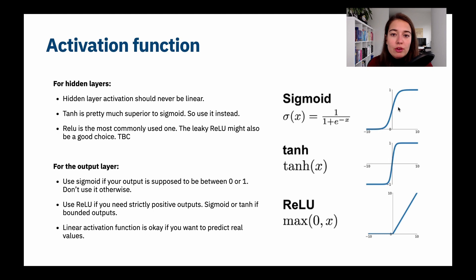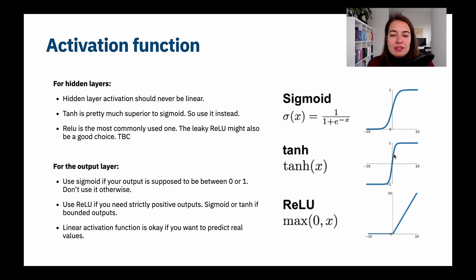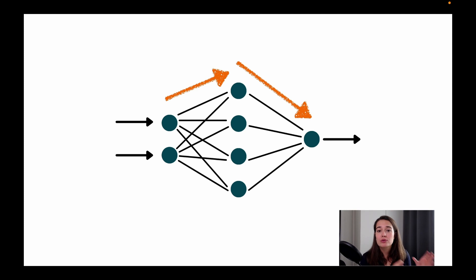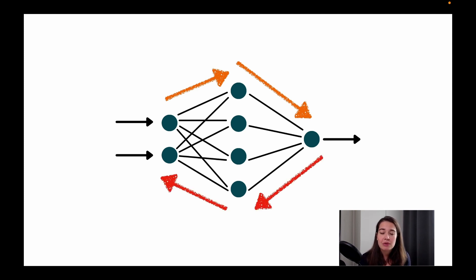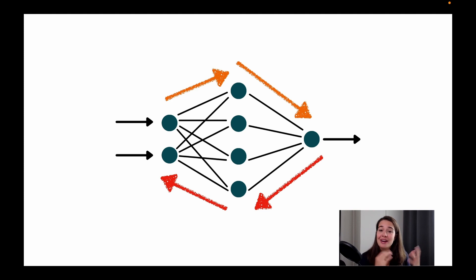Depending on what you want your output to be, you can decide on your activation function. If you want output between 0 and 1, use Sigmoid; from minus 1 to 1, use Tanh. The output layer activation function decision is more about common sense and your specific problem, whereas for hidden layers there are certain ones that will be much better for your network. In this lesson, we learned how information flows forwards in a neural network — that's called forward propagation — and how to calculate the output of each neuron, each layer, and the whole network. In the next lesson, we will see how information flows backwards through a process called backpropagation using gradient descent, which is what makes the network learn and understand patterns in the data.